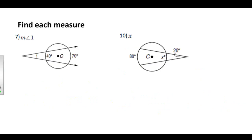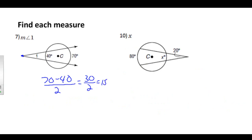Let's try two more examples. Find the measure of angle one. Angle one has its vertex outside the circle, so I subtract the two arcs and divide by two. The two arcs are 70 and 40. 70 minus 40 is 30, and 30 over 2 is 15 degrees. The measure of angle one is 15 degrees.